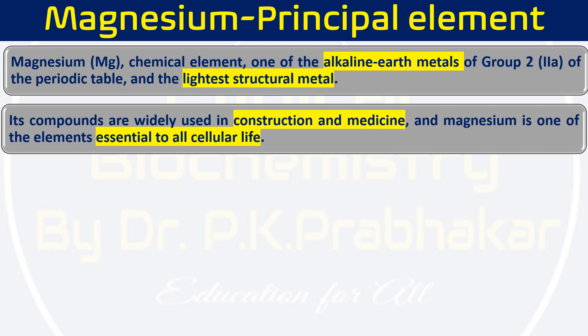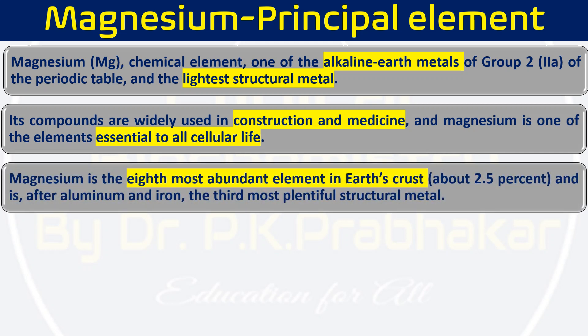Magnesium is present in three different isotopic forms: magnesium-24, which is the maximum at 79%; magnesium-26, roughly 11%; and magnesium-25, roughly 10%. There are also 19 different radioactive isotopes that have been prepared, including magnesium-28. Magnesium is the eighth most abundant element in the earth's crust, constituting roughly 2.5% of it, and is the third most plentiful structural metal after aluminum and iron.